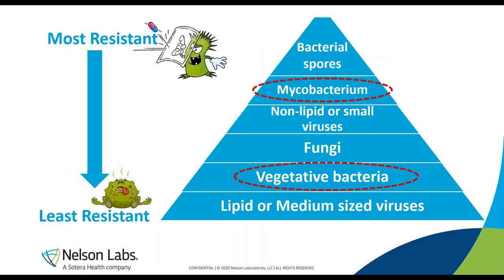Why different microorganisms? Looking at the resistance pyramid, vegetative bacteria are at the bottom — least resistant — while mycobacteria are among the most resistant. Mycobacteria are chosen for high-level disinfection because if you can kill them, every less-resistant microorganism is also killed. Vegetative bacteria are used for low-level disinfection because the definition requires killing vegetative bacteria, some fungi, and some viruses. High-level disinfection also includes some killing of bacterial spores, but not in large amounts.